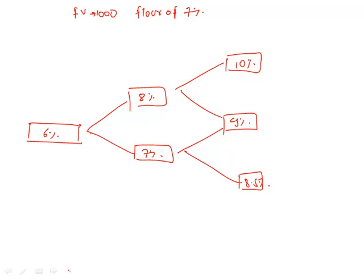1009.10. Yes, Prince, how much? 1009.10. Value of this node would be 1000, value of this node would be 1000, value of this node also be 1000. And if you discount backwards, this node is 1000, this node is 1000.